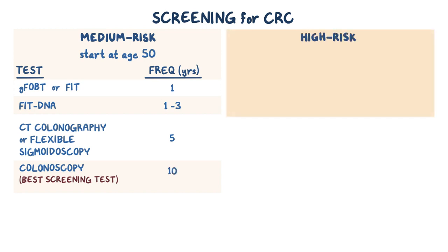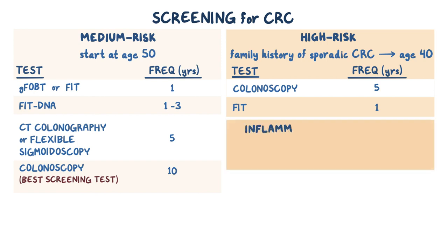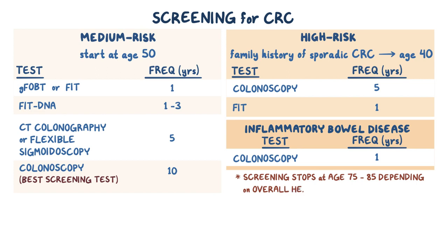With high risk individuals, screening starts earlier than usual. If an individual has a family history of sporadic CRC, then screening should start at age 40 with a colonoscopy and be repeated every 5 years. Alternatively, a FIT test can be done annually. Individuals with inflammatory bowel disease should get a colonoscopy every year. Typically, screening stops between age 75 and 85, depending on the individual's overall health.